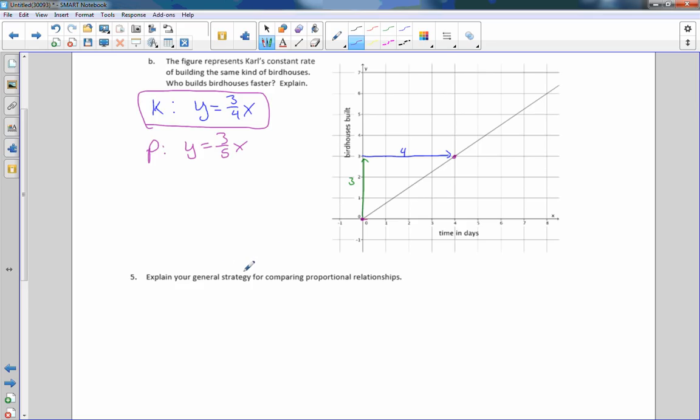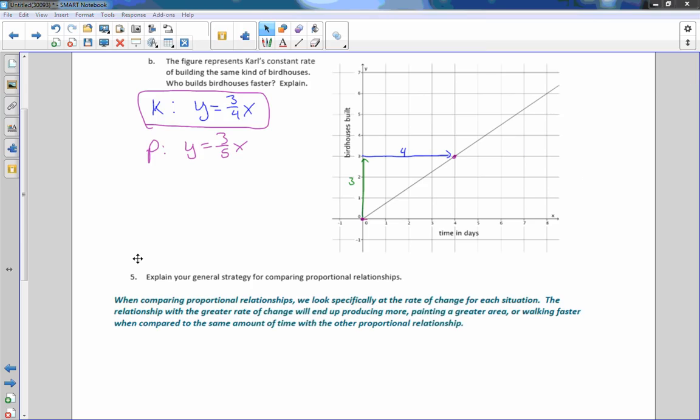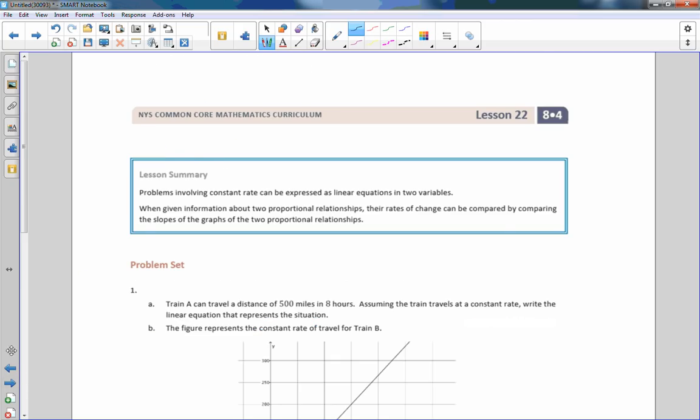So explain your general strategy for comparing proportional relationships. This was a little lengthy to write, so I just copied it and pasted. When comparing proportional relationships, we look specifically at the rate of change for each situation. And that is true. That is what we were comparing, the rate of change. The relationship with the greater rate of change will end up producing more, painting a greater area, or walking faster when compared to the same amount of time with other proportional relationship. So basically what they're saying is we compared our constant rates. That is the end of lesson 22. Review the lesson summary and go do your problem set.